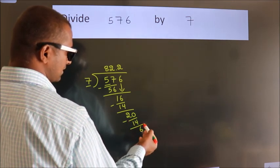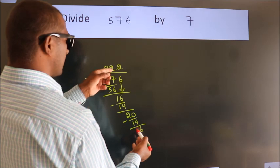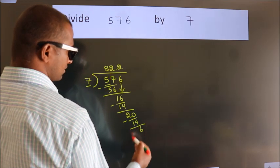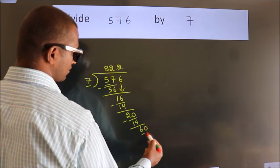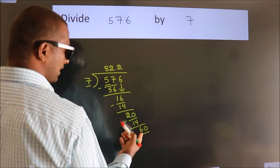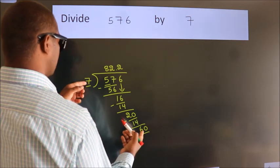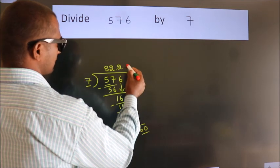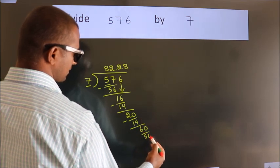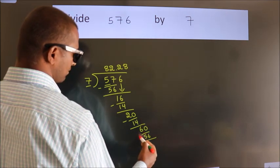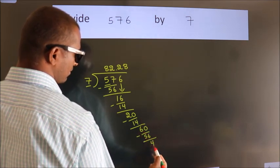After this, we already have the decimal. So directly take 0. So 60. A number close to 60 in the 7 table is 7 times 8 is 56. Now we subtract. We get 4.